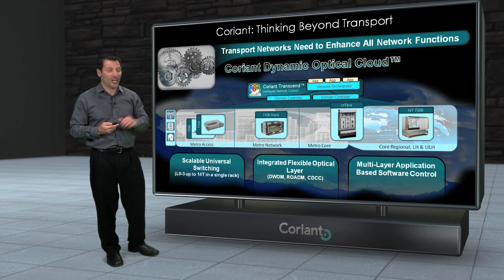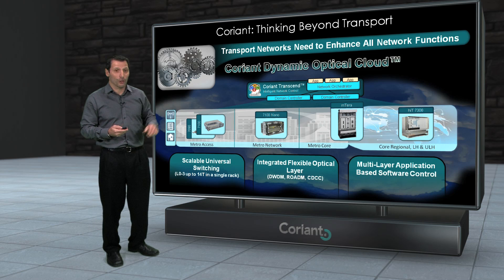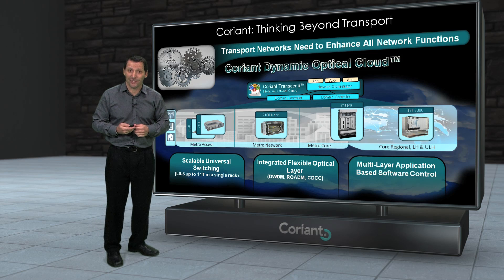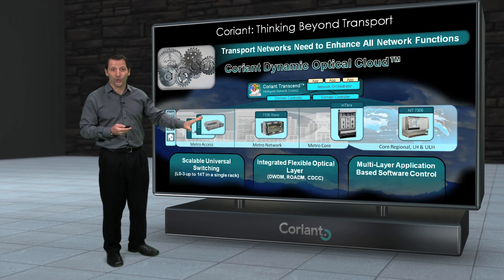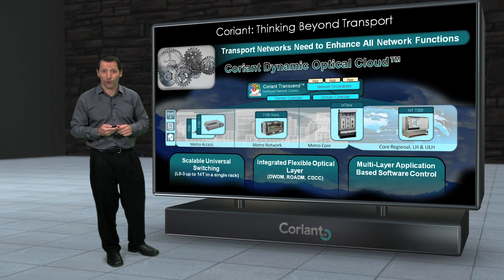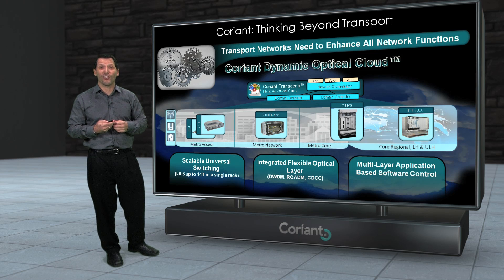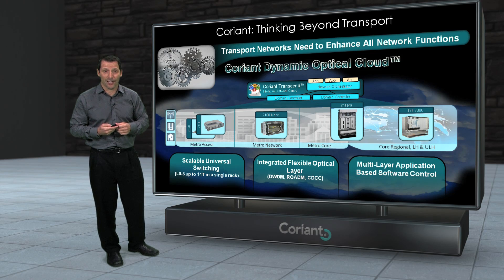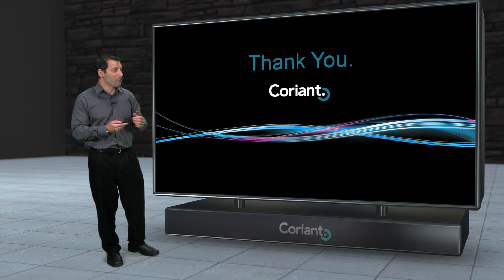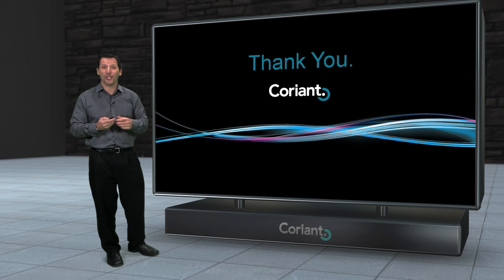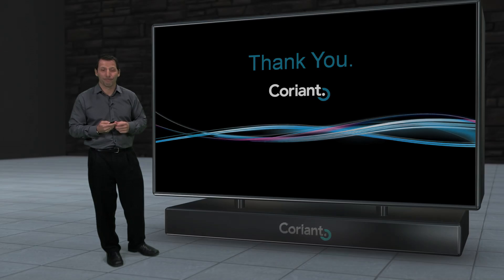This brings us to the end of this session. Hopefully it gives you a better understanding of what SDN is and what it can accomplish, and how you can interweave SDN into flexible infrastructure solutions to create end-to-end transport solutions that improve all aspects of your business — such as we've done with the Coriant Dynamic Optical Cloud. For more information, including Coriant's Transcend SDN solution or Coriant's Universal Infrastructure solutions, please visit us at Coriant.com. Thank you for watching.